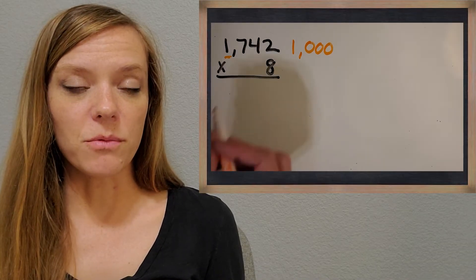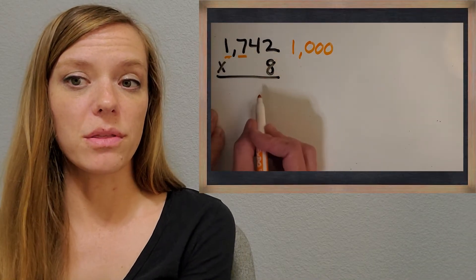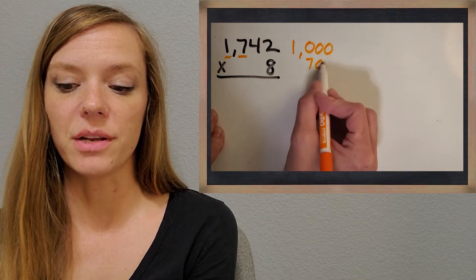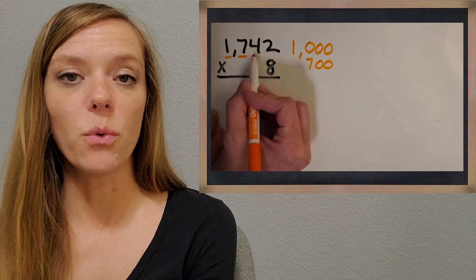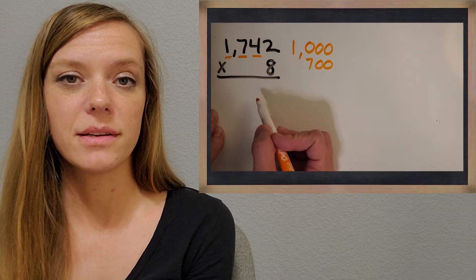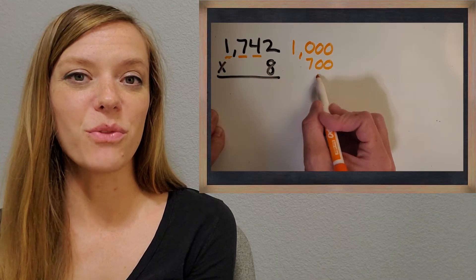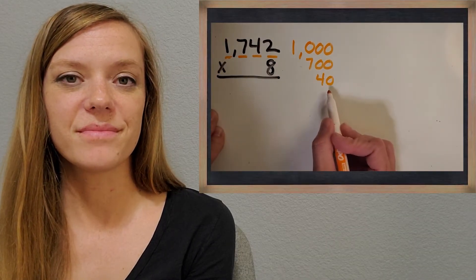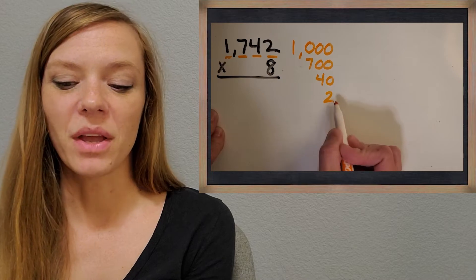Now let's do the seven. What is the seven really worth? Awesome, 700. What is the four really worth? It's in the tens place. You got it, so it's worth 40. And then what about that two? Just two.